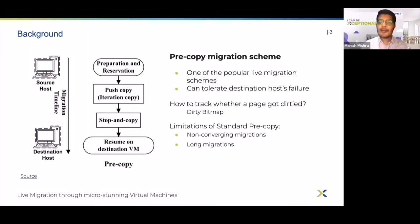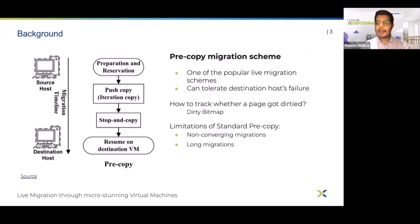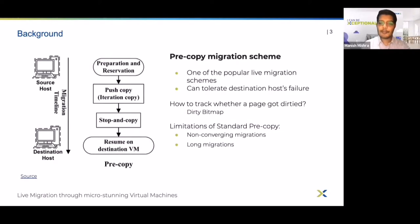This continues until we have an amount of dirty memory left so small that we can transfer it within the blackout time limits. When we reach that point, we stop the VM on the source host, transfer the remaining dirty memory to the destination, and then resume the VM on the destination host. But there are some limitations of pre-copy migrations.